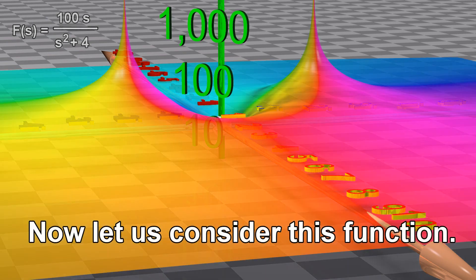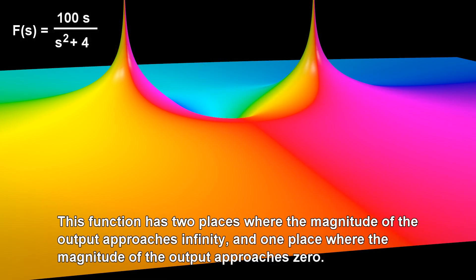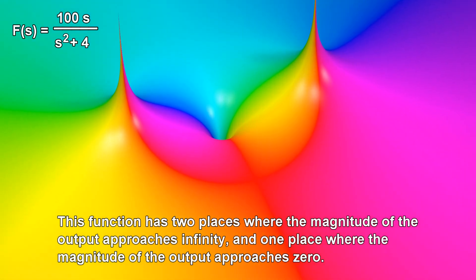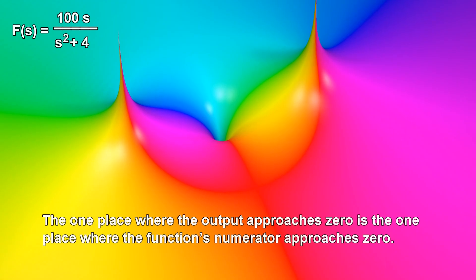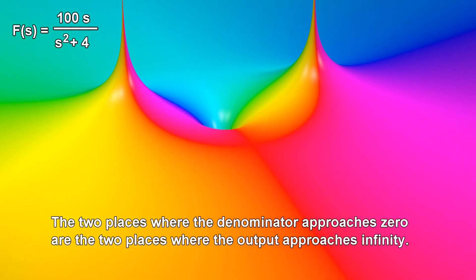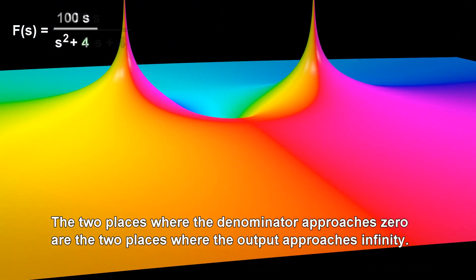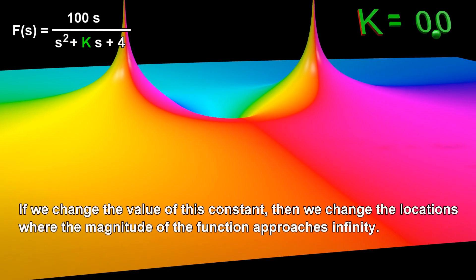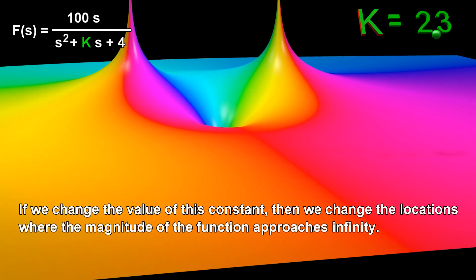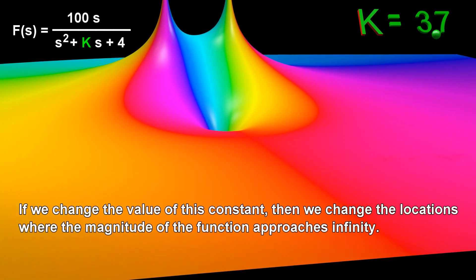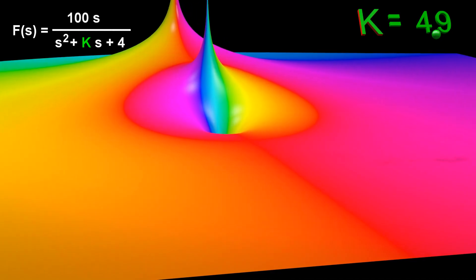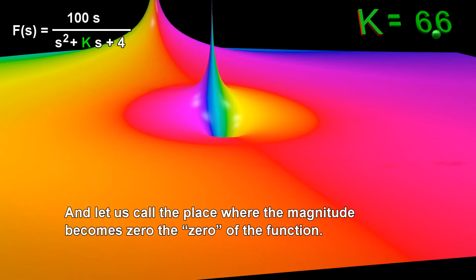Now, let us consider this function. This function has two places where the magnitude of the output approaches infinity, and one place where the magnitude of the output approaches zero. The one place where the output approaches zero is where the function's numerator approaches zero. The two places where the denominator approaches zero are the only two places where the output approaches infinity. Let us call the places where the magnitude becomes infinity the poles of the function, and let us call the place where the magnitude becomes zero the zero of the function.